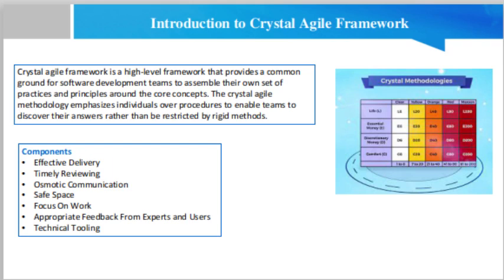The different teams in the Crystal Agile Framework are named after colors and divided based on the number of team members. Crystal Clear has less than 8 members, Crystal Yellow has 10 to 20 members, Crystal Orange has 20 to 50 members, and Crystal Red has 50 to 100 members. Thank you so much for watching the video. I hope you liked it. If you did, please share it with your friends and colleagues, as it will be helpful. Thank you.